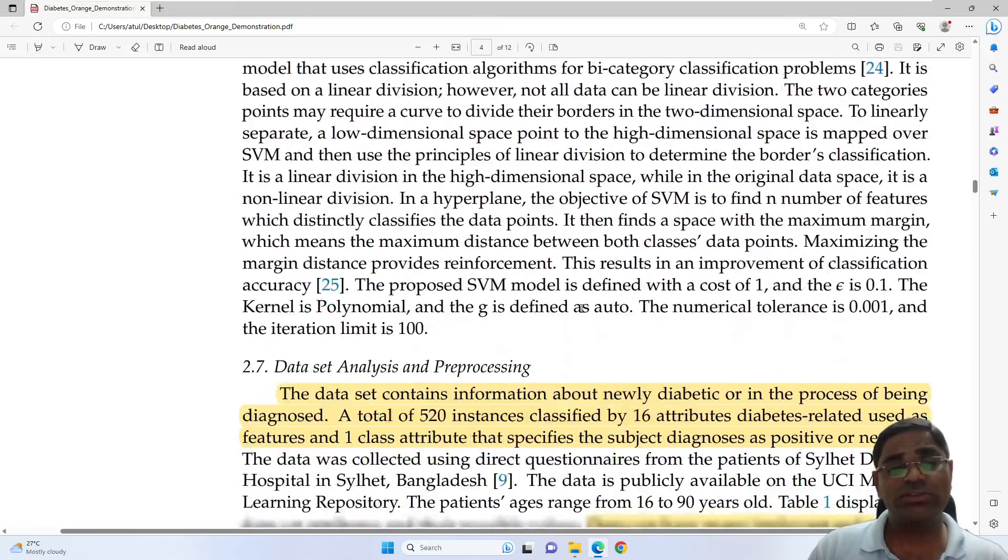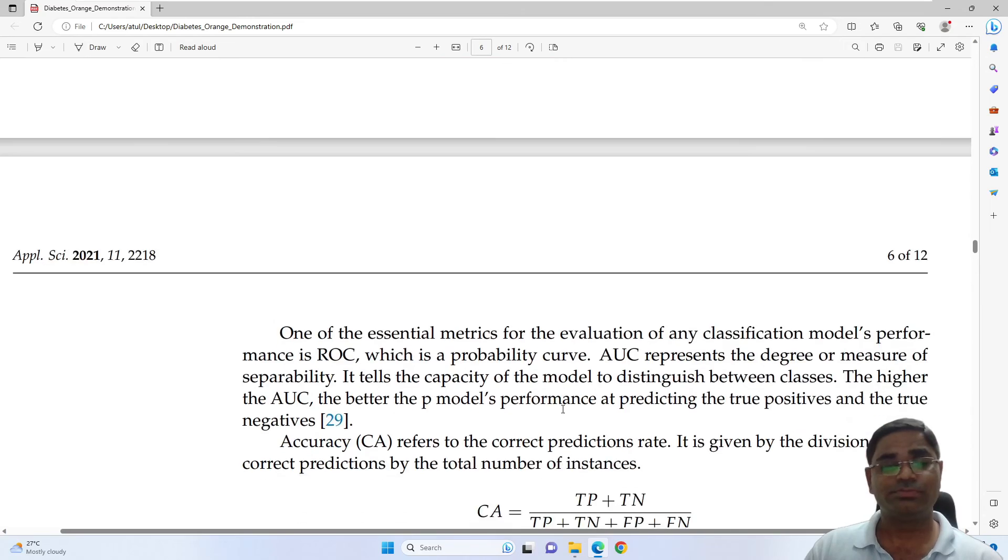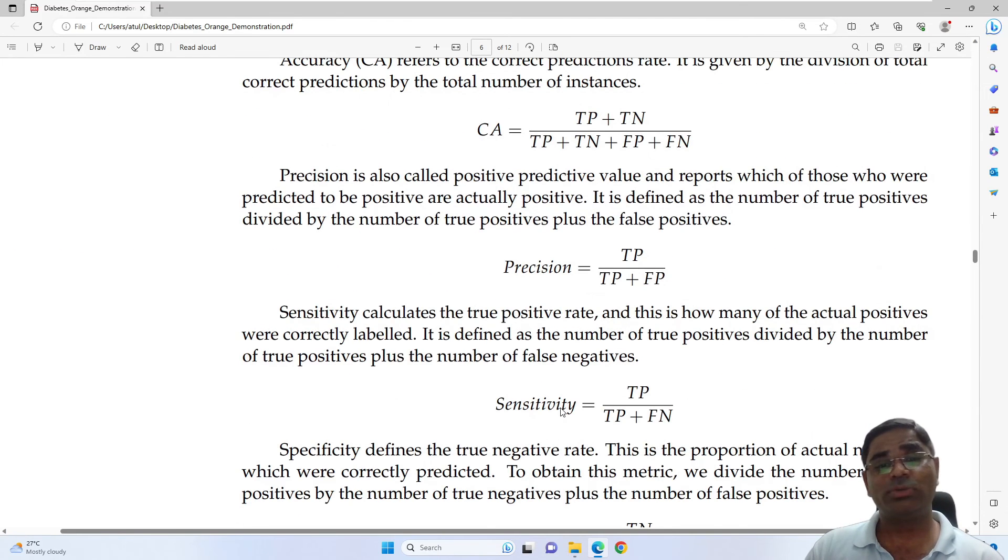After creating the models, the next step would be to analyze the matrices. So we will analyze the different models created using area under curve, classification accuracy, precision, recall or sensitivity, specificity, and F1 score. If you don't know about these, you can read from this article; there are formulas given for each and every one of the matrices.